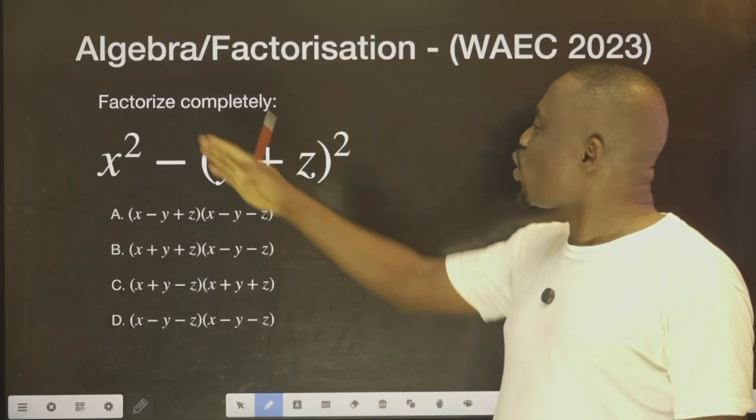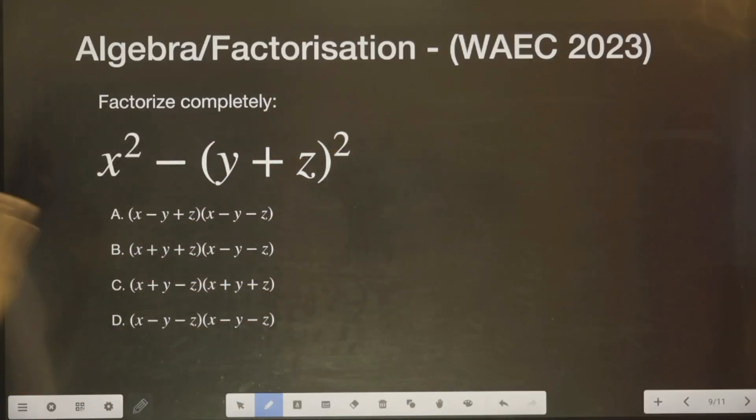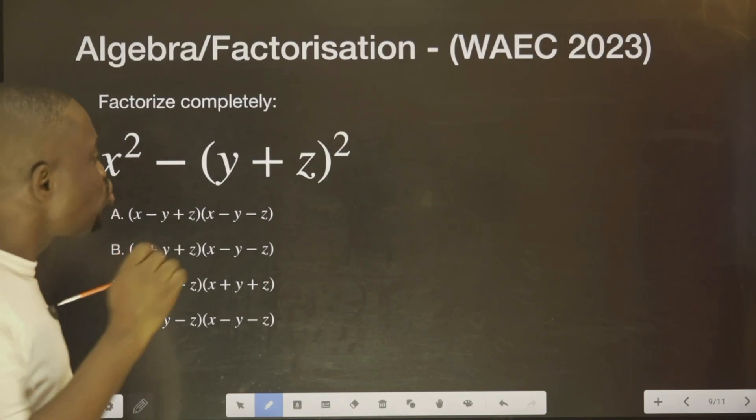We are asked to solve this. It says factorize completely this. To do this, you use the difference of two squares.